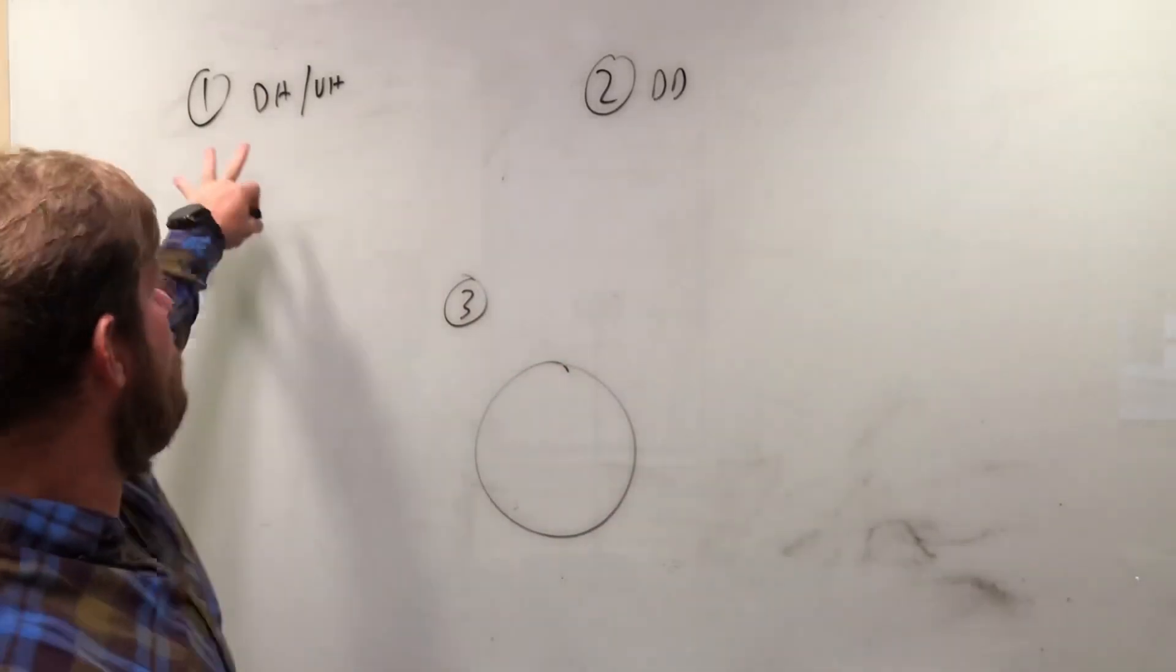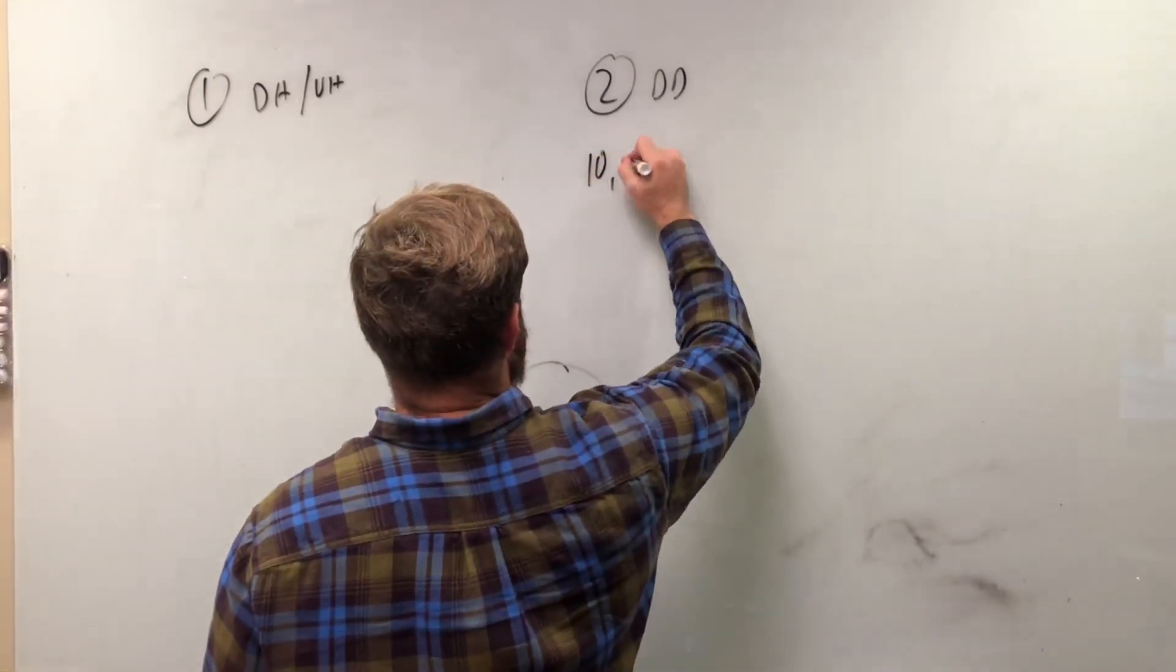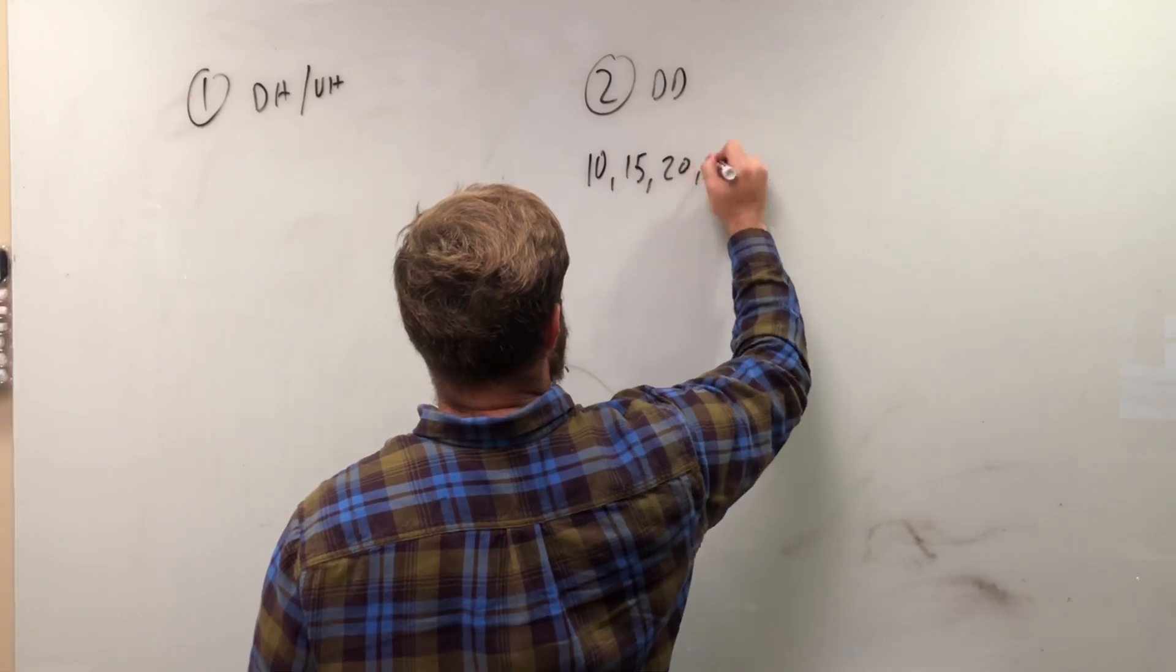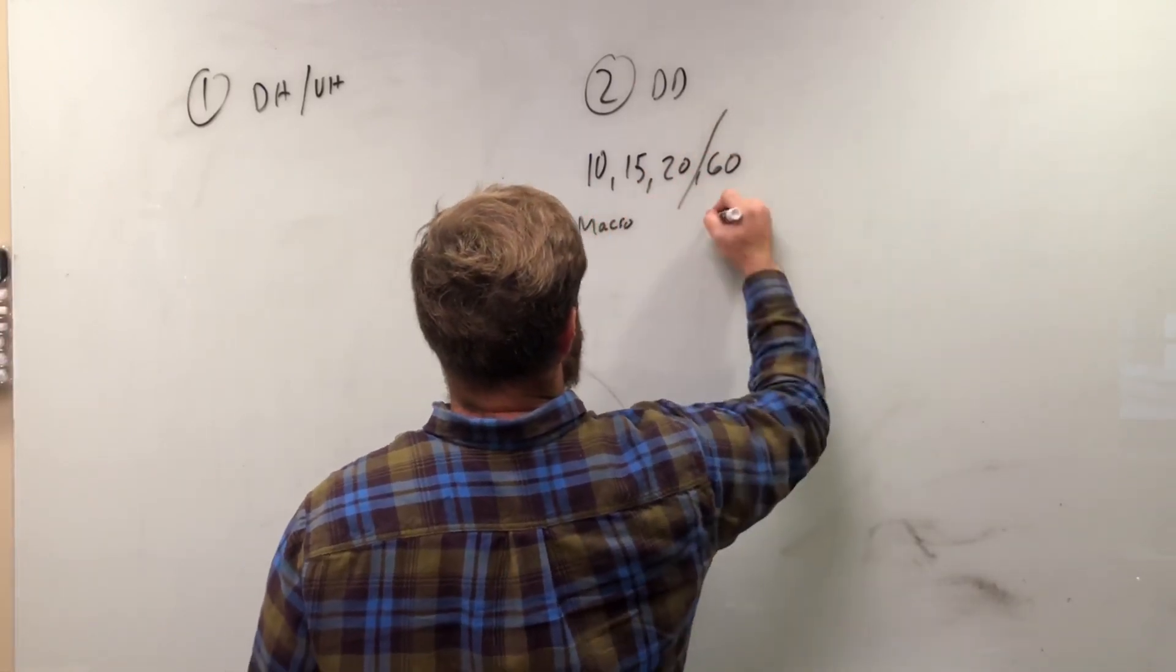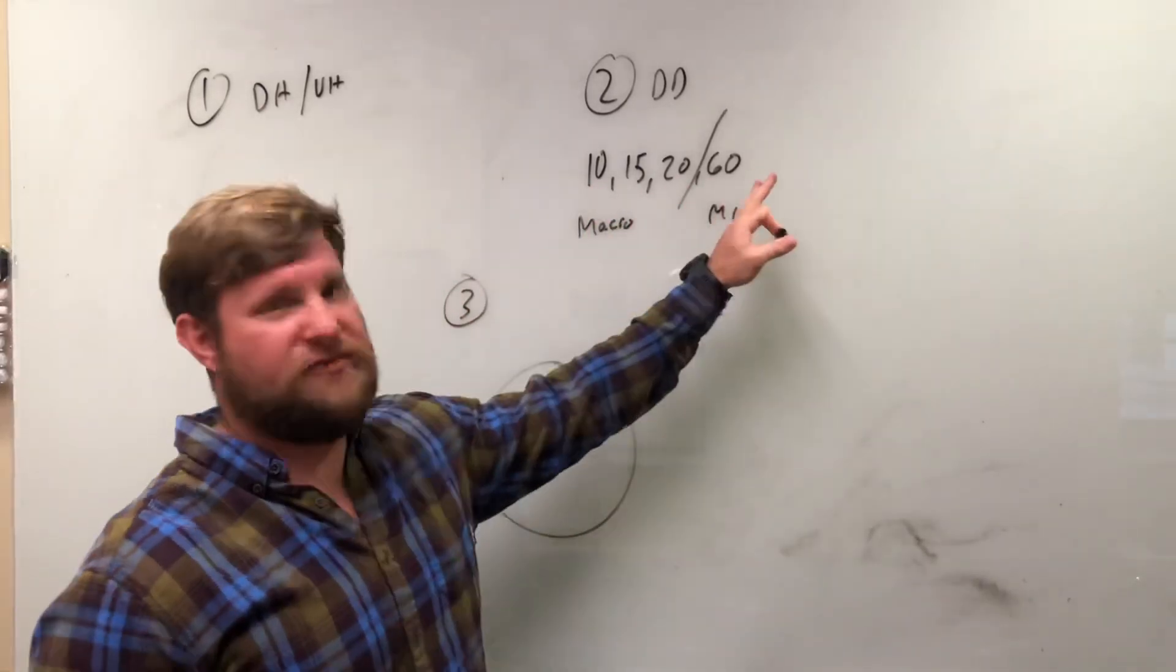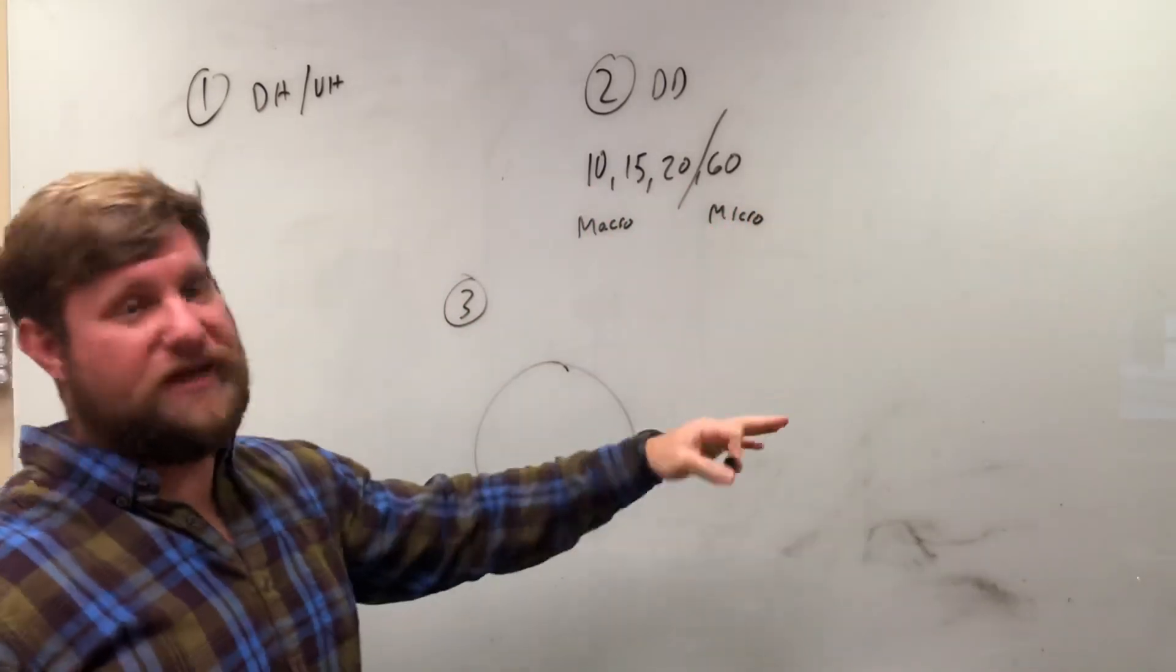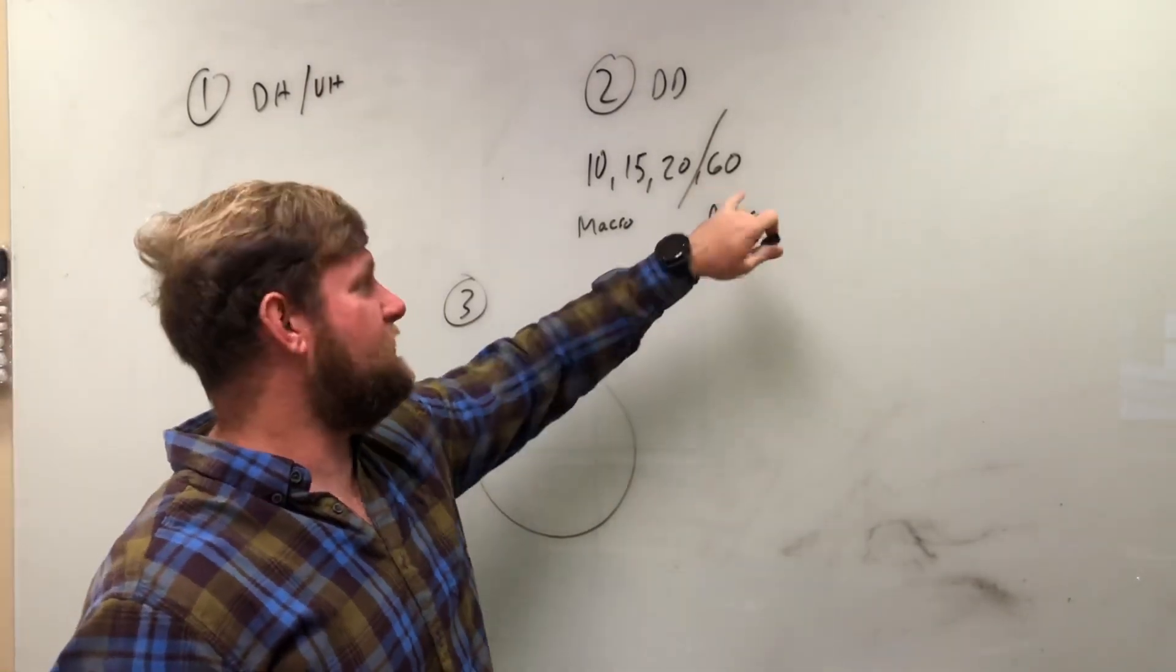Now, before we get into this, let's talk about our drip sets. All of our drip sets are, you know, 10s, 15s, 20s, 60s. So we have our macros and our micros. Now, if you notice, all of these divide into 60. There's a reason for that. There's 60 seconds in a minute, 60 minutes in an hour. This is going to be important later.